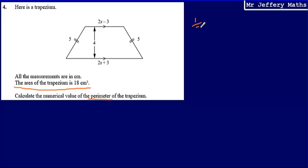The formula is half of a plus b multiplied by h, where a and b are the lengths of the two parallel sides and h is the height.